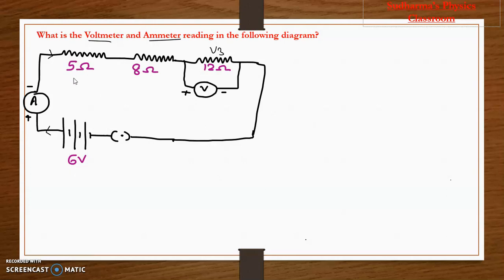We have three resistors: 5, 8, and 12 ohms, and there is a voltmeter connected across the 12 ohm resistor. This is a series connection. In a series connection, different resistors will have different potential differences dropped across them, and current is going to be the same through all the resistors. The ammeter reading means the total current in the circuit, and the voltmeter reading means the potential difference across the 12 ohm resistance.